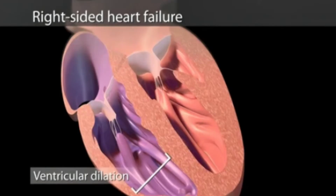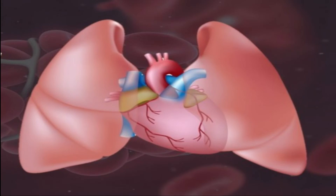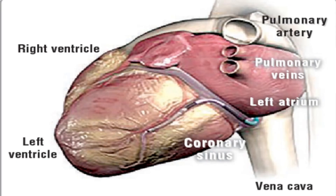Diastolic heart failure is when the left ventricle has become stiff and cannot relax between heartbeats, meaning it cannot properly fill with enough blood. Right-sided heart failure impacts the side of your heart that receives oxygen-poor blood from your body. In right-sided heart failure, the heart cannot effectively pump blood to the lungs to receive oxygen. Biventricular heart failure is when both sides of the heart are impacted.